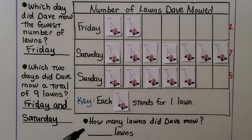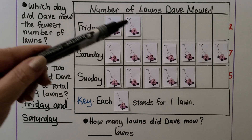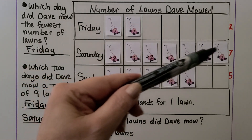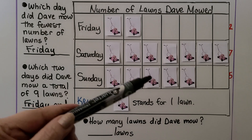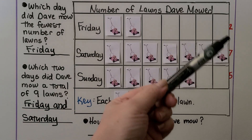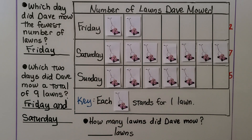This question asks: how many lawns did Dave mow in all? We can count each picture separately, counting up to fourteen. We also could have added the totals we already found: seven plus five is twelve, plus two more is fourteen. He mowed fourteen lawns.